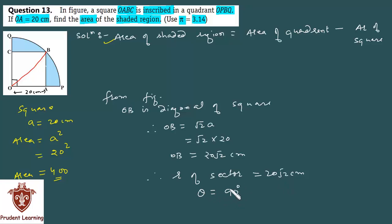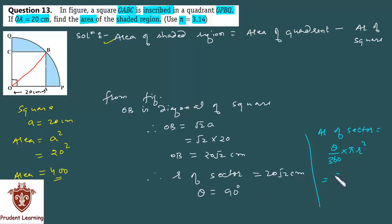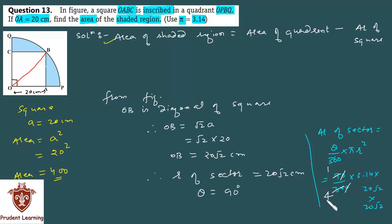तो हम easily इस sector का area find कर सकते हैं. We have area of sector = θ/360 × π × r². Value substitute करते हैं: θ = 90, upon 360, into π = 3.14 (as given in question), into radius = 20√2. तो 20√2 का square करना होगा: (20√2)² = 800. 90/360 = 1/4. Rough work: 3.14 into 5√2 into 20√2 बच रहा है.